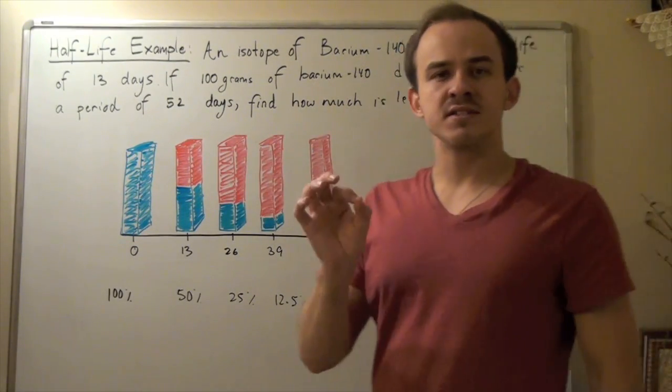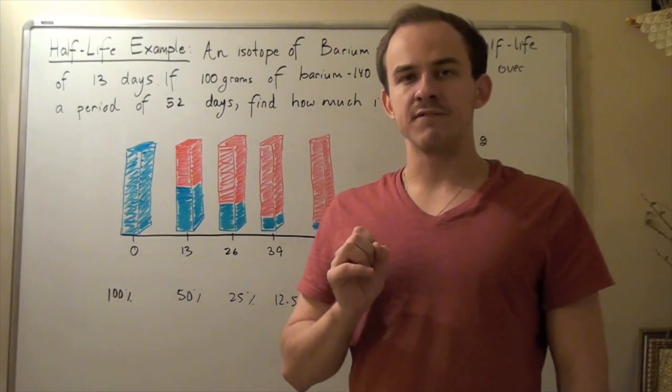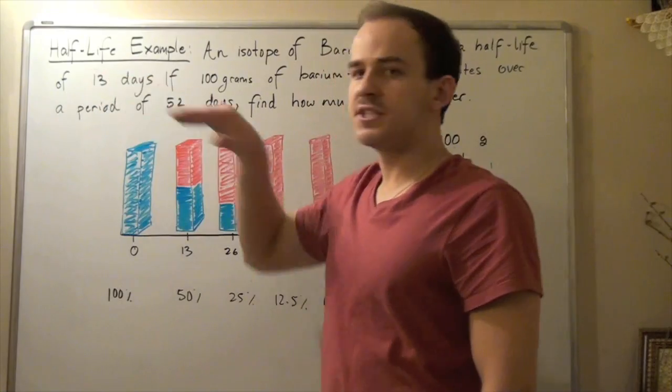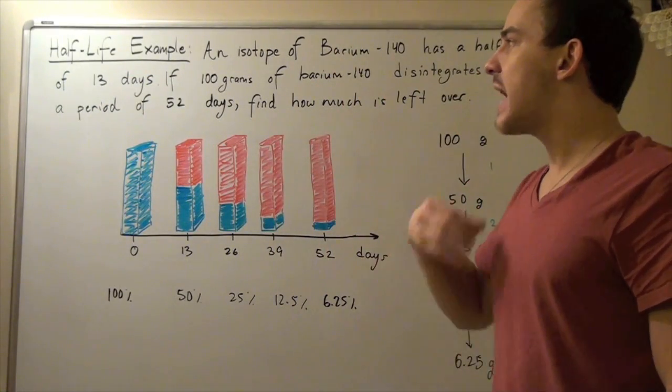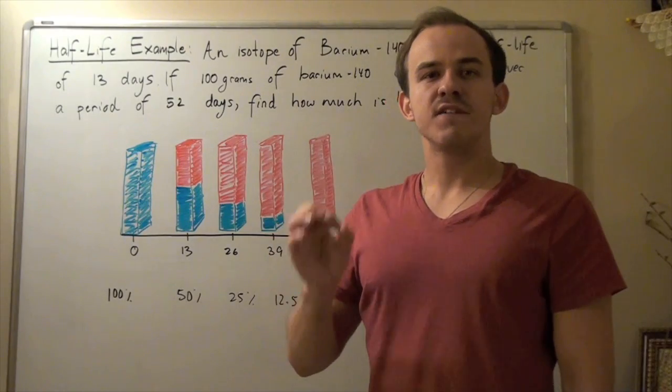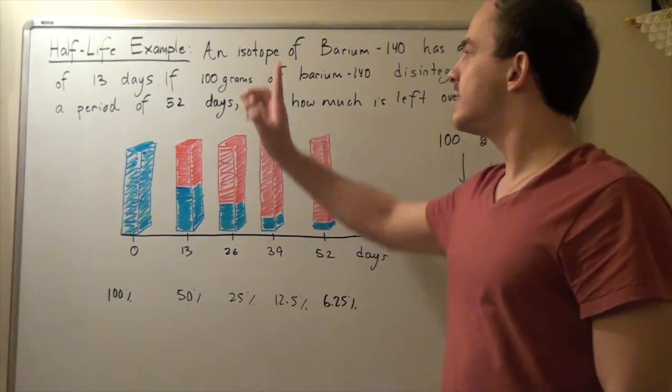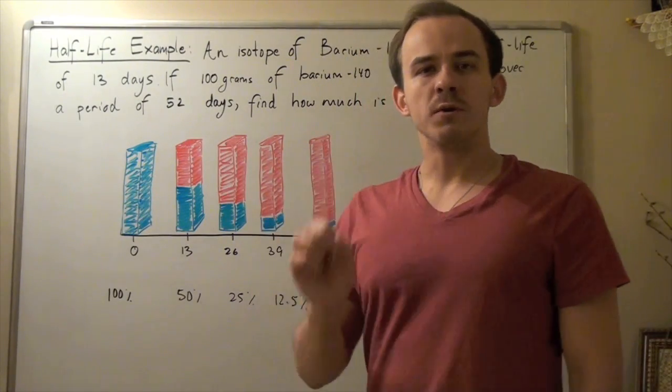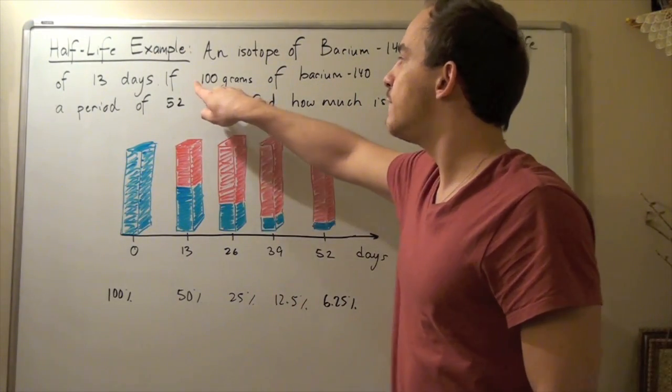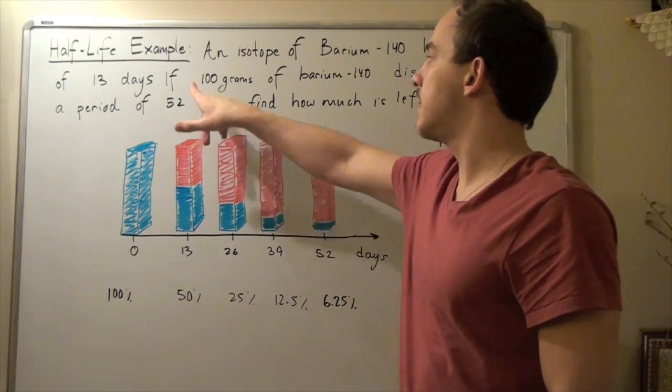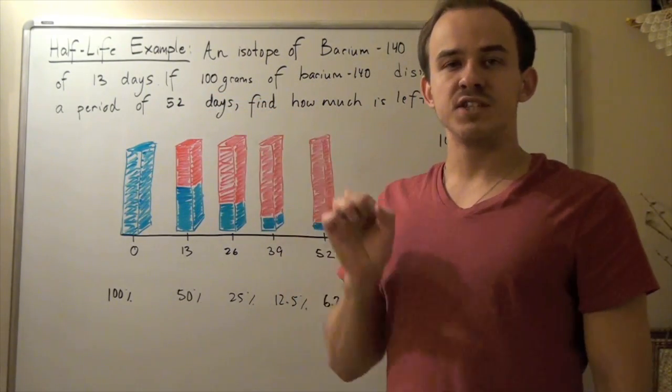So our first step is to basically realize what our half-life is. According to this example, our half-life is 13 days. That means after 13 days we will have exactly half of our initial amount. Since our initial amount is 100 grams, after 13 days we will be left with exactly 50% of this amount, which is 0.5 times 100, and that's 50 grams.